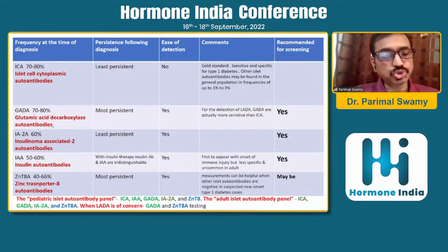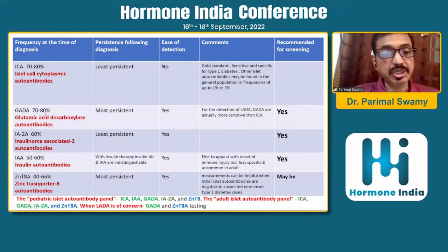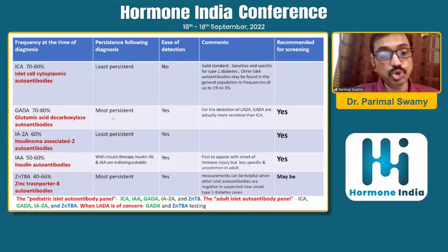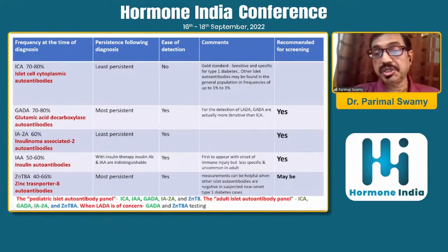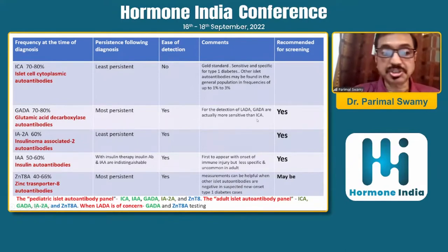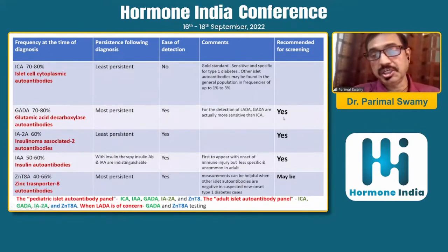The GADA antibody is the most commonly known and used antibody, present in 70–80% at diagnosis. It is the most persistent autoantibody and can be found late in life, which is why it is used for LADA screening and detection. The assay is now simple and can be done at large scale with high throughput. GADA may be more sensitive than ICA and is recommended for population screening.